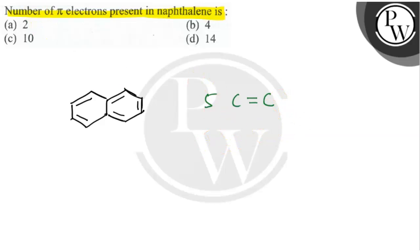That means it has 10 pi electrons. So from this we get to know that our required answer will be option C, that is 10. Naphthalene has 10 pi electrons in itself. I hope the concept is clear to all. Thank you and all the best.